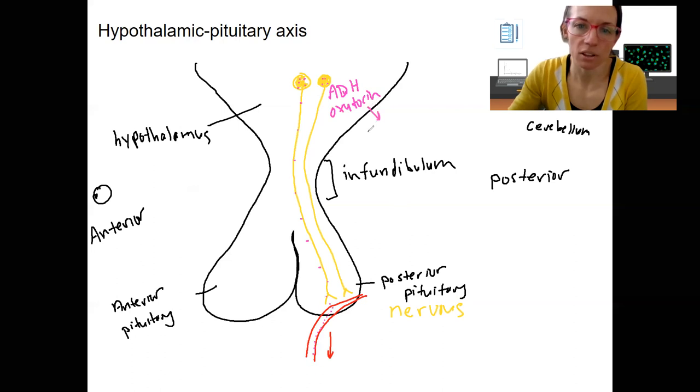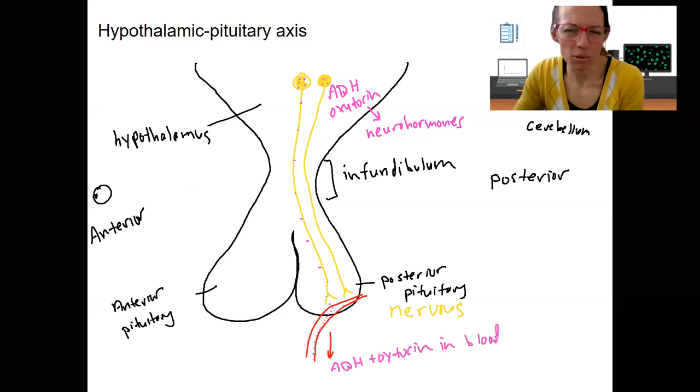So these two things are neurohormones. I'm not going to be picky. Once they're in the bloodstream, they're called hormones. So here there's ADH and oxytocin traveling in the blood. Yes, they're neurohormones, but they're also hormones. They were produced in a neuron. You don't want to call them neurotransmitters. They're not. Second, we've got, so that's the posterior pituitary. That's what we're going to do with it for now.